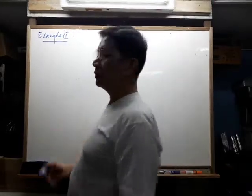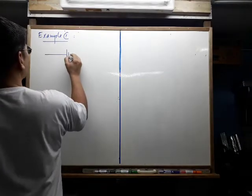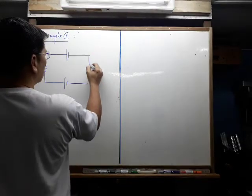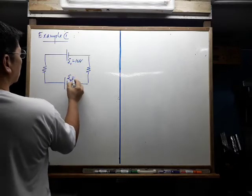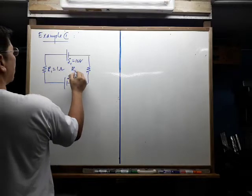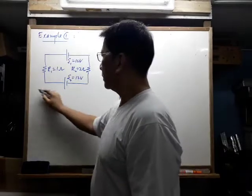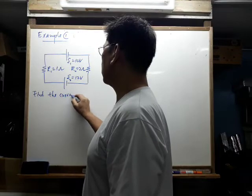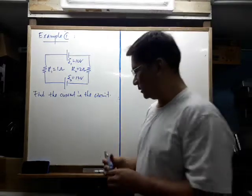For example one, I'm going to use two resistors and two batteries. Battery number one, resistor number one, battery number two, and resistor number two. Battery number one is 10 volts, battery number two is 12 volts, resistor number one is one ohm, and resistor number two is two ohms — to make things easier for our calculation. The question is: find the current in the circuit.